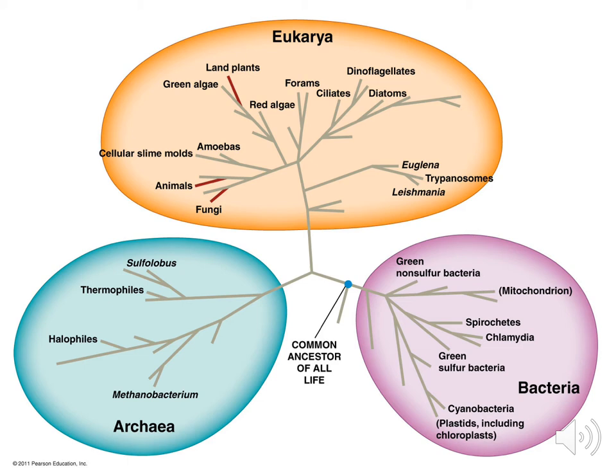In this phylogenetic tree you can see the relationship fungi have to animals and how closely they are related. You can also see where red algae falls in terms of land plants and green algae and how they are closely related. If they come on the same branch, that means they share ancestry.